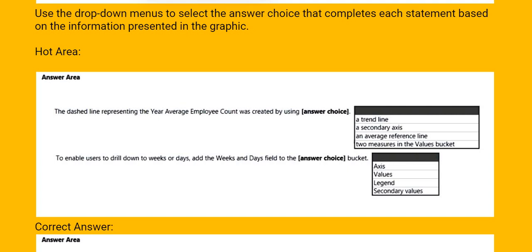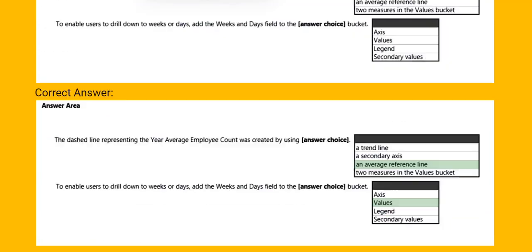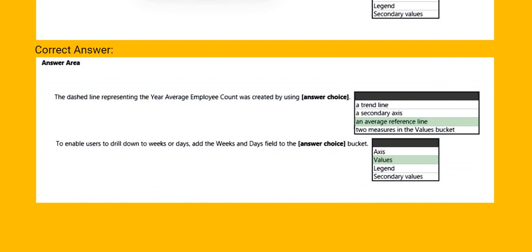To enable users to drill down to weeks or days, add the weeks and days field to the blank bucket. Select: axis, values, legend, or secondary values. The correct answers are highlighted in green.